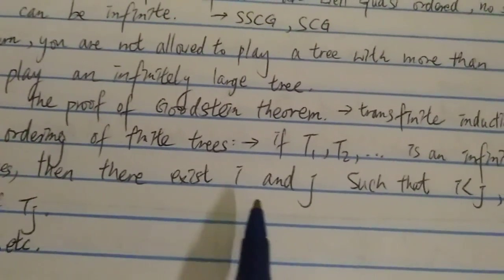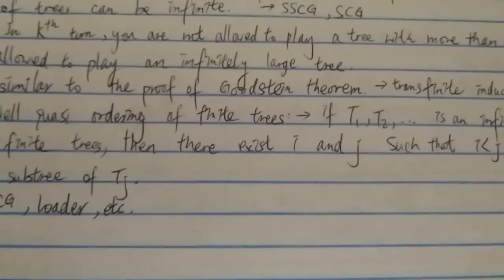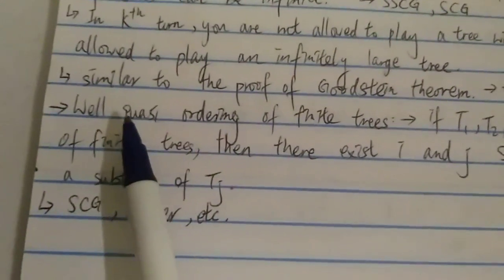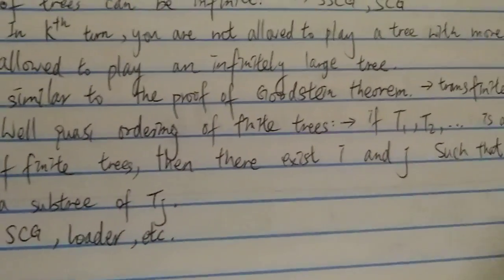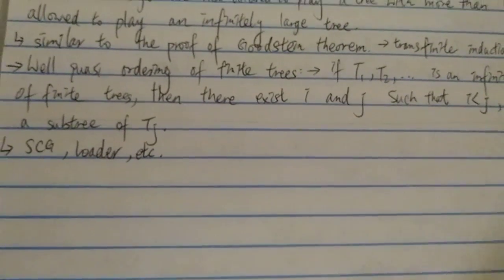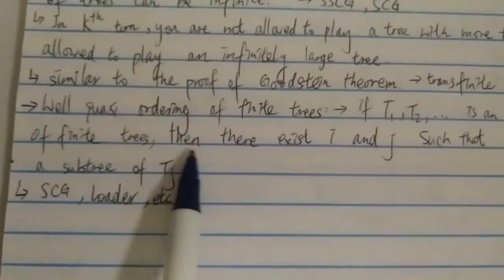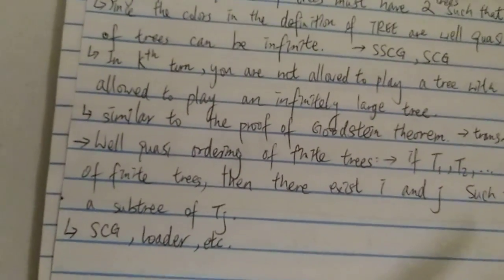Another thing to note: you've probably heard of 'well-quasi-ordering.' The Kruskal tree theorem states the well-quasi-ordering of finite trees. What this means is: if T1, T2, T3, ... is an infinite sequence of finite trees, then there exist i and j such that i < j and T(i) is homeomorphically embedded in T(j) — T(i) must be embeddable in T(j). If such a sequence is well-quasi-ordered, then T(i) must be embedded in T(j) in some finite number of steps.